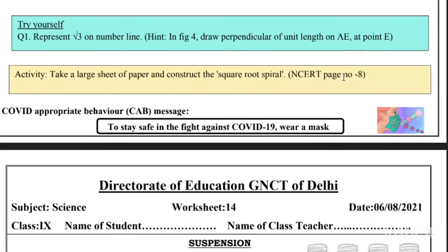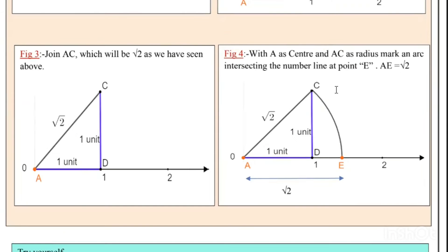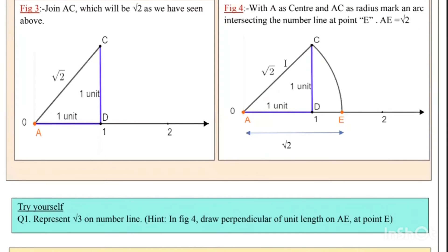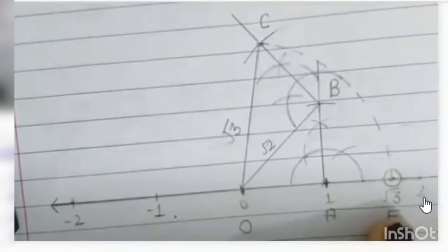Now there is a question: represent √3 on the number line. From the figure, we draw a perpendicular of unit length from point AE. We can take one perpendicular from AE of height one unit, and connecting it we can get the length of √3 as well. This is the construction of √2 and how we represent √2 on the number line.